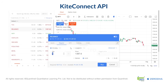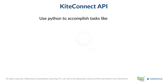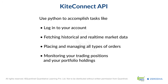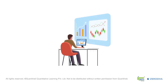Instead of manually clicking buttons on the Kite website or app, you can use your Python code to accomplish tasks like logging into your account, fetching historical and real-time market data, placing and managing all types of orders, and monitoring your trading positions and portfolio holdings. In essence, KiteConnect helps you automate your trading activities. In the next video, we will set up our own Zerodha developer account and get one step closer to building your own algorithmic trading system. See you there!